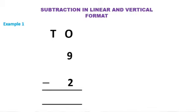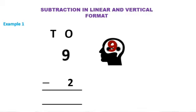Our first example is 9 minus 2. Now kids, tell me which number is greater — number 9 or number 2? Yes, number 9 is greater than number 2. So we will keep number 9 in our mind and we will take out 2 fingers. After that, as it is 9 minus 2, we have to count backward 2 from number 9. Backward counting from 9: it is 8, 7. So our answer will be 7. 9 minus 2 is equal to 7.